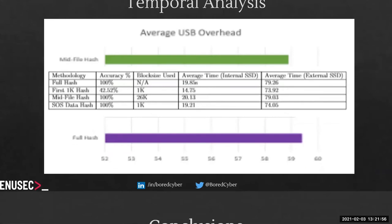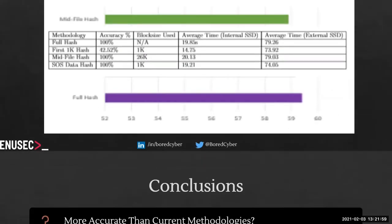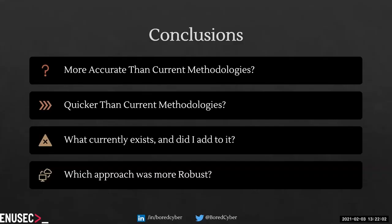The conclusions I was able to draw: was it more accurate than current methodologies? I took my approach as well as full hashing and changed the file headers, the metadata, and appended a bit to the end. Full hashing was not able to identify the images uniquely as the hash had changed entirely just by changing the metadata. But the mid-file hash wasn't affected by this, so it was able to identify the file. And the SOS data marker was the same — it didn't change that effect. Was it quicker than current methodologies? Slightly.